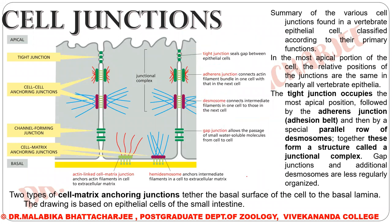Now coming to the gap junctions. The gap junctions allow the passage of small water-soluble molecules from cell to cell. Apart from them, there are some other kinds of junctions which adhere the cell to the base. We have hemidesmosomes, which anchor intermediate filaments in a cell to the extracellular matrix.